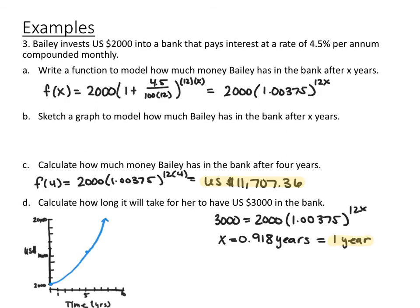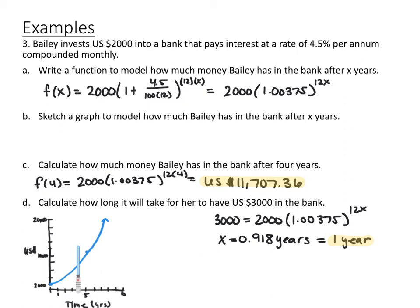Using the compound interest formula: present value is $2,000, interest rate is 4.5%, compounding periods is 12, and the unknown x is years. Plugging that in and simplifying gives f of x equals 2,000 times 1.00375 to the 12x — that's the function modeling how much money Bailey will have after x years. A graph is sketched below, though it's technically discrete since interest is earned monthly, not continuously, so the amount jumps up each month.